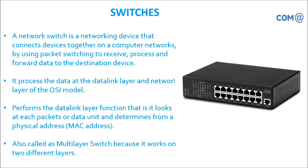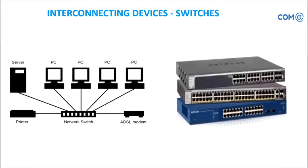Switch performs data link layer functions — it looks at each packet and determines the physical address. It works on two different layers. Some switches are called L3 switches, meaning they can act as both L2 and L3 switches. L3 switch has the advantage of managing some parameters, while L2 switch uses only default connections. Switch allows more than one system to connect and is faster than previous devices. It also maintains a MAC table where source and destination MAC addresses are captured during communication.